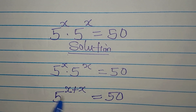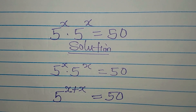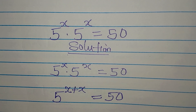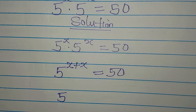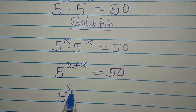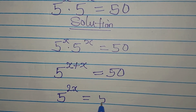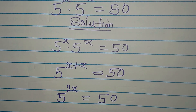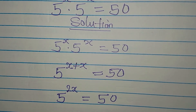This is because the bases are the same — pick one of them and we add the powers. So 5 to the power of 2x will be equal to 50, because we have added the powers on the left.